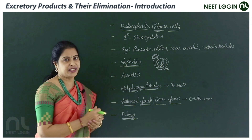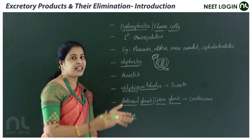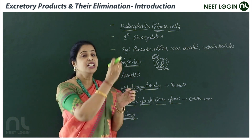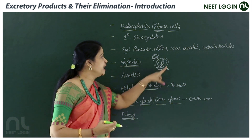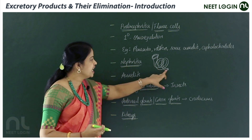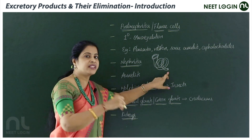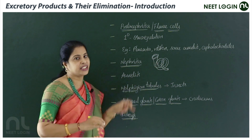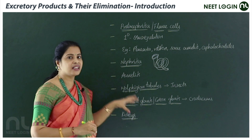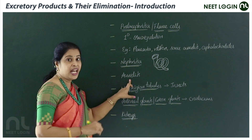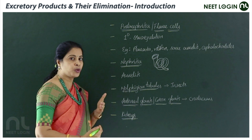Next are the nephridia. In annelids, they have a funnel-shaped structure for collecting waste, a coiled tube-like body, and a pore called the nephridiopore — which you have already studied in earthworm typology. Nephridia are the excretory organs in members of annelida.